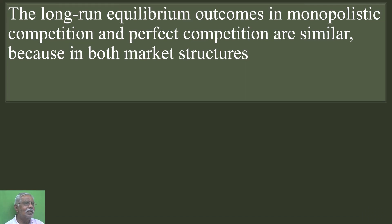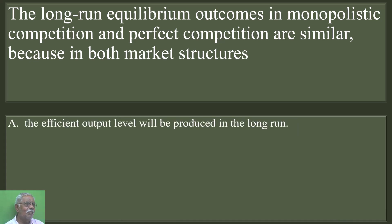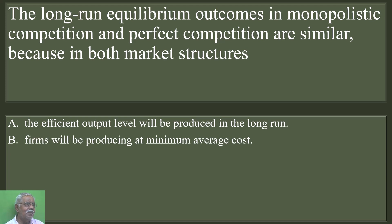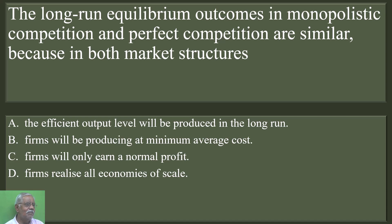The long-run equilibrium outcomes in monopolistic competition and perfect competition are similar because in both market structures: the efficient output level will be produced in the long run; firms will be producing at the minimum average cost; firms will only earn a normal profit; or firms realize all economies of scale. Option C is the correct answer — firms will only earn a normal profit.